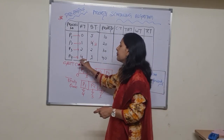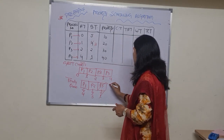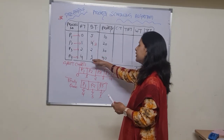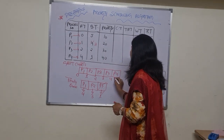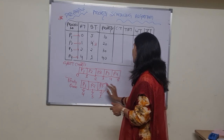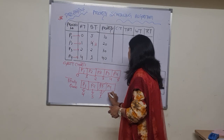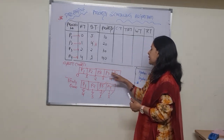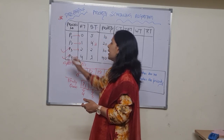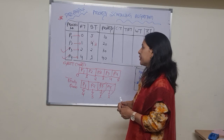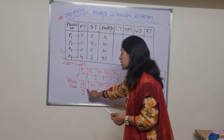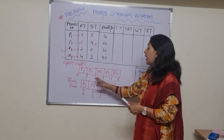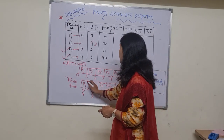Between three and four, process P4 has arrived at time four. So CPU is now allotted to P4. P4's burst time is one quantum of time only, so P4 is completely executed. Process P4 is completed. Now only P1 and P2 are left with remaining burst times of four and three respectively.